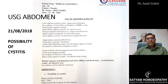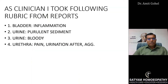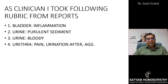Now we had to treat the patient for cystitis with blood in the urine — a urinary tract infection. Looking at these three reports and considering everything, as a clinician I took the following rubrics: the first rubric was inflammation of the bladder — cystitis, so rubric: bladder inflammation. The second, there is pus in the urine — rubric: urine, purulent sediment.